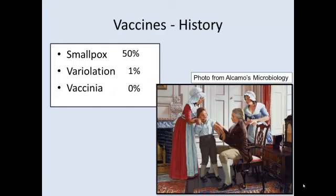At the time they had no idea how they were providing protection — they just knew that they were. Later on, when we talk about types of vaccines, we'll cover how protection is provided. Because the first vaccine for smallpox was kind of an accident, it was hundreds of years later before we came up with the next vaccine, which was for polio. Since then we have vaccines for all sorts of different diseases, and thank goodness we do.